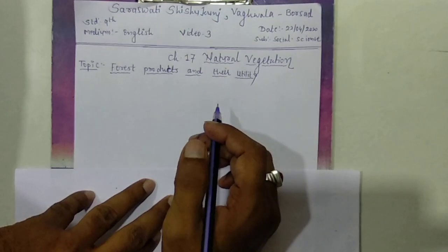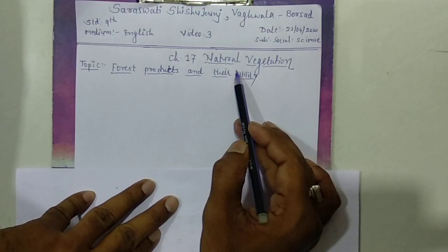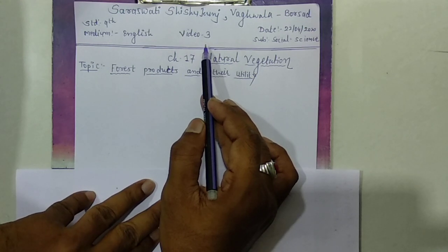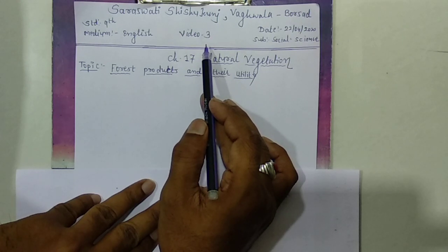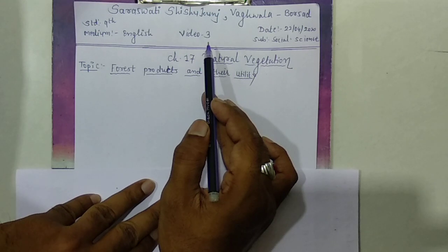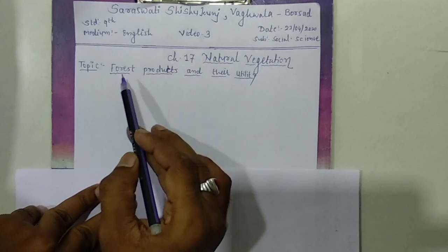Dear students, standard 9th, subject social science, chapter number 17 - Natural Vegetation, video number 3. In video 1 we talked about the meaning of natural vegetation and why there is diversity in natural vegetation. In video 2 we discussed five types of natural vegetation found in India. In video 3 our topic is forest products and their utility.